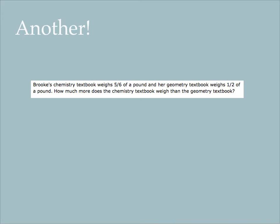Let's do another one. I'll pull out the important information with you. And just like yesterday, I'm going to be a little stinker, and I'm going to change the problem on you. Brooke's chemistry textbook weighs 5/6 of a pound, and her geometry textbook weighs 1/2 of a pound. How much more does the chemistry textbook weigh than the geometry textbook? I'm going to change this 1/2 to a 1/4. The bigger one weighs 5/6 and the smaller one weighs 1/4. So I am going to have to do 5/6 minus 1/4. Pause the video, try to solve this problem.